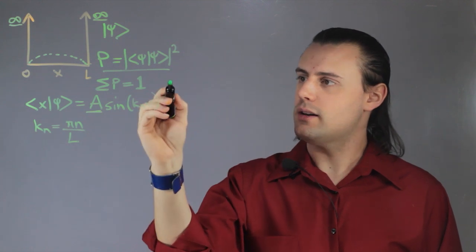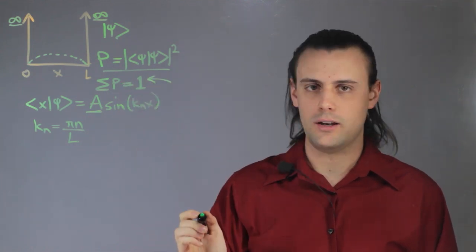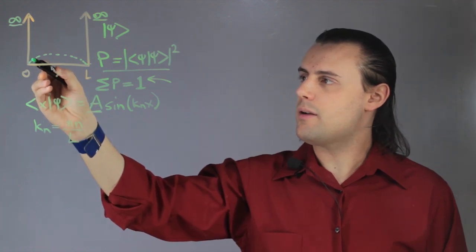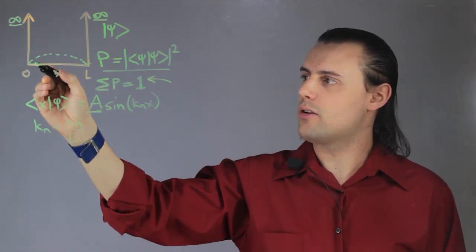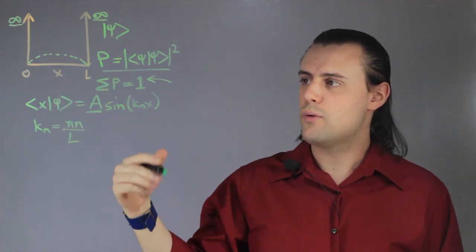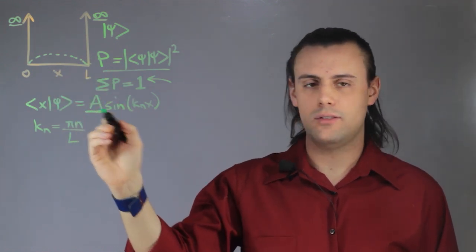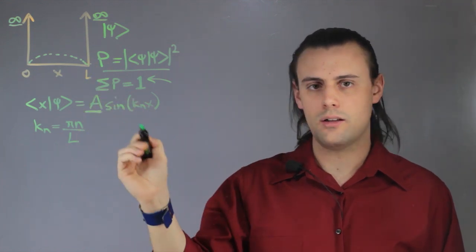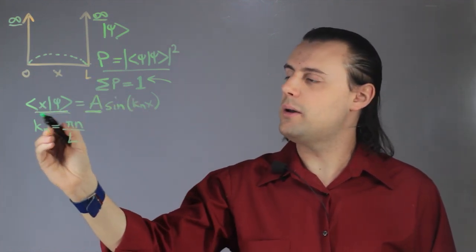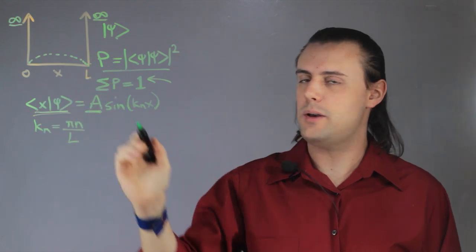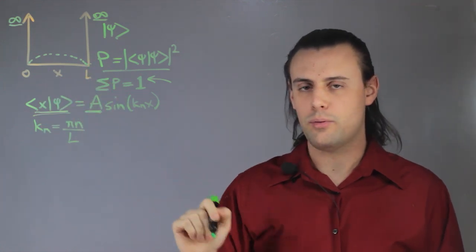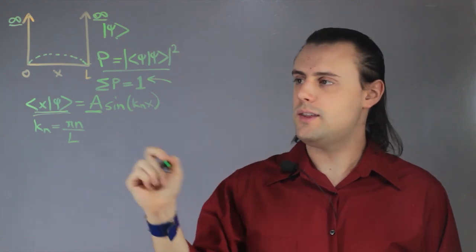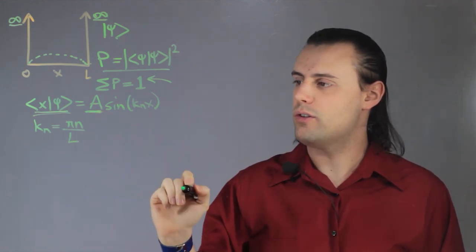So the only thing we don't know is this amplitude A, but we do have a constraint, which is that the total probability must be equal to one. So in this case, if we add up all the probabilities of the particle being in all of the positions, we can determine what this value A is. And we would do that by integrating the space-dependent wave function over all space. So we end up with a probability density function that we integrate over, set that equal to one, and we solve for the amplitude.